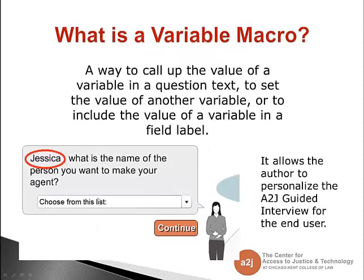So first, what is a variable macro? It's a way to call up the value of a variable in a question text, a way to set the value of another variable, and a way to include the value of a variable in a field label. Basically, it allows the author to personalize the A to J guided interview for the end user by using the end user's name or other personal information, drawing them further into the interview.